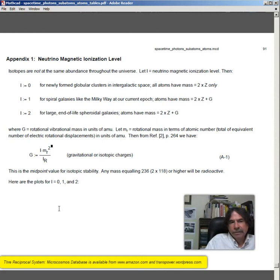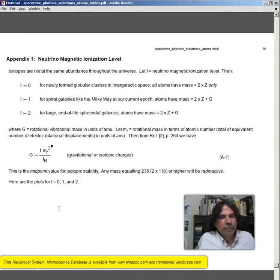Then, I equals zero. For newly formed globular clusters in intergalactic space, all atoms have mass 2 times z only. Where z, of course, is the atomic number. Note that in the reciprocal system, globular clusters are young, not old.